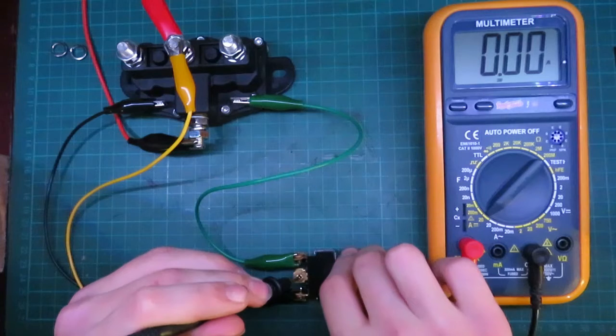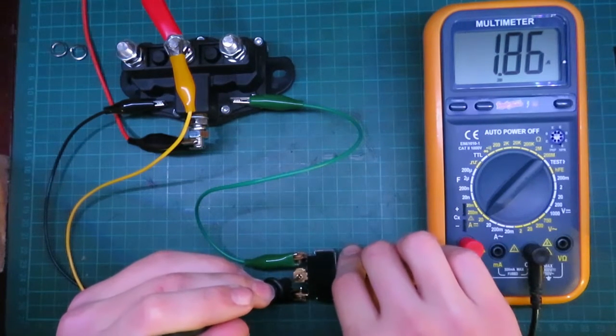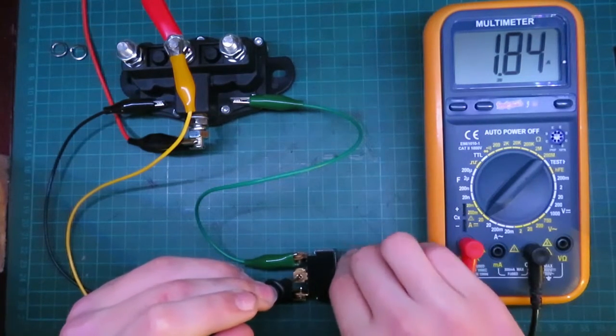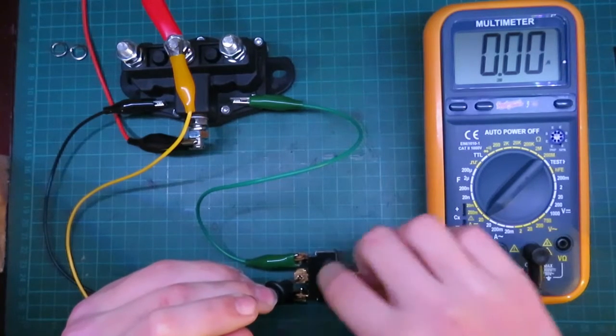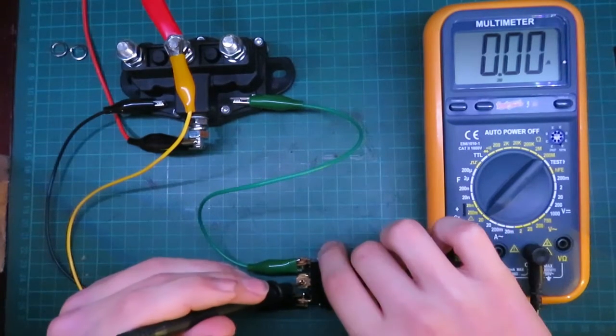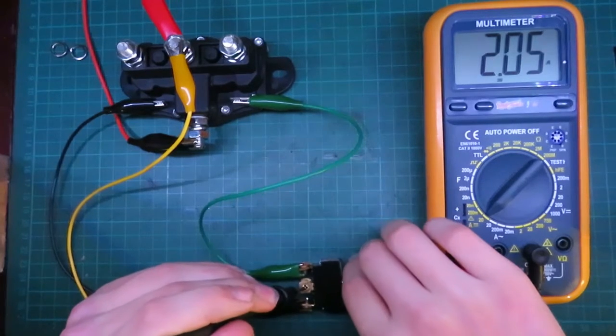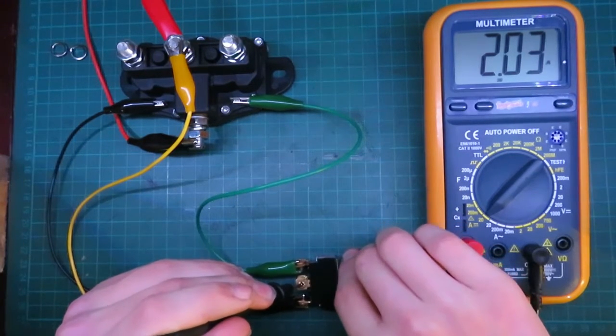Here we go. We're going to flip it one way, and it draws about 1.8 amps. Good. And then back to the middle position, zero. I'll flip it the other way. And it's about 2 amps.